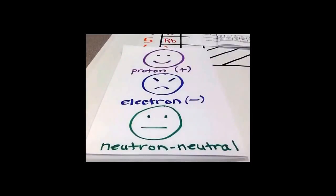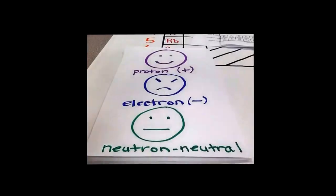Now that we know how to find protons, electrons, and neutrons in an atom, how can we draw this and illustrate it? Well, we use what we call a Bohr diagram.